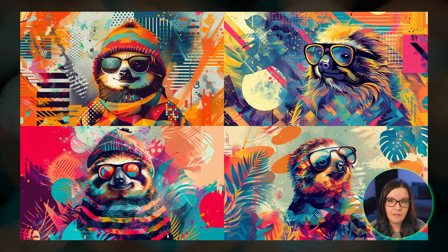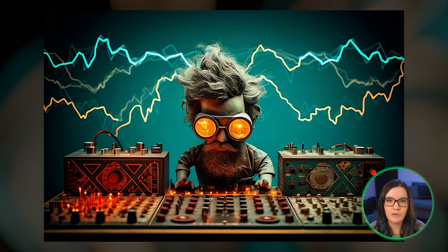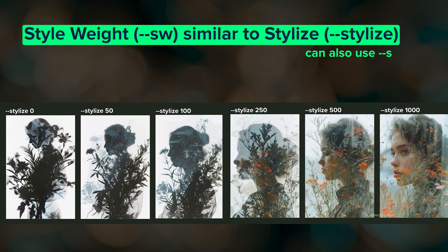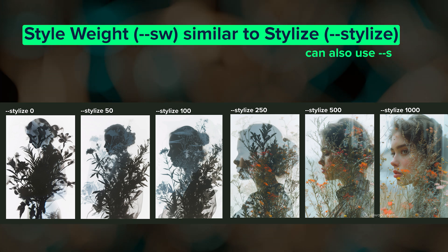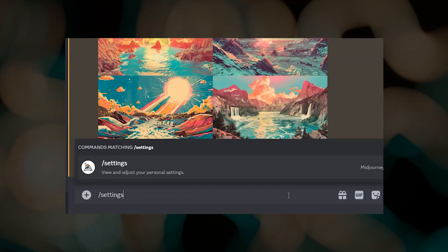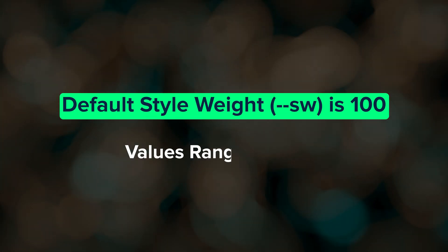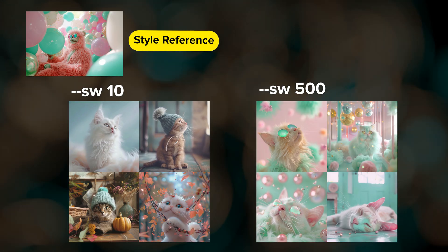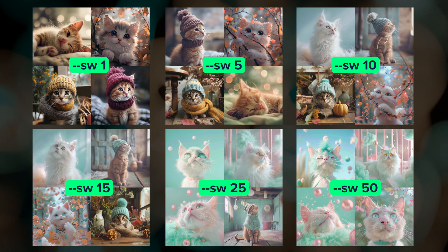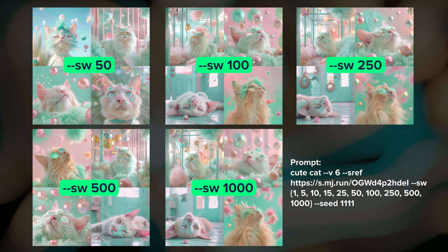Using the style reference parameter with a single image is powerful by itself, but there are more knobs and dials we can play with to control how a style reference affects our results. The first of those is the style weight parameter, --sw. This is very similar to the stylize parameter — stylize controls the strength of the default Midjourney aesthetic, and most people have this set to 100 by default. The default value for style weight is also 100 and it has the same range as stylize: 0 to 1000. The greater the style weight, the greater the effect that the style reference will have on your results. The strength doesn't seem to increase linearly — there's a huge change from style weight 1 up to 50, after which the effect plateaus pretty quickly.